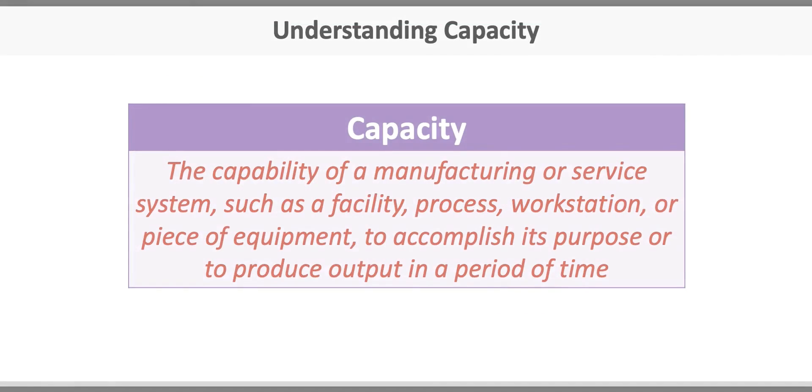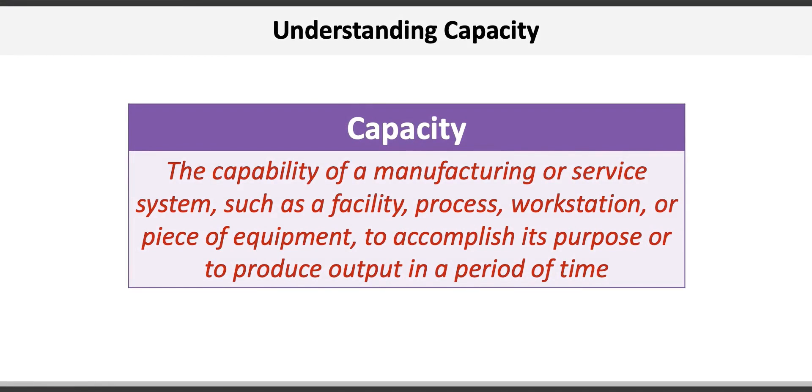Capacity is simply the capability of a manufacturer or service system, such as a facility or process, workstation or piece of equipment, to accomplish its purpose or to produce output in a period of time. For example, a single barber may have the capacity to cut hair at a rate of 4 people per hour, or an oil refinery can refine 150,000 barrels of oil per day.